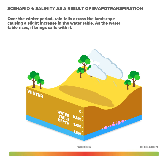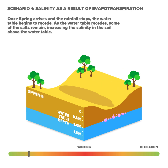Over the winter period, rain falls across the landscape causing a slight increase in the water table. As the water table rises, it brings salts with it. Once spring arrives and the rainfall stops, the water table begins to recede. As the water table recedes, some of the salts remain, increasing the salinity in the soil above the water table.